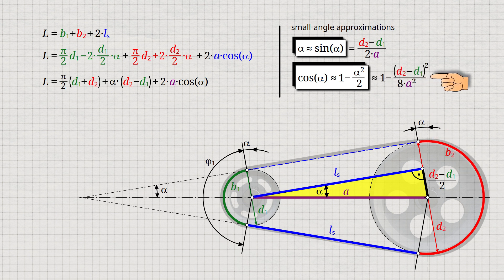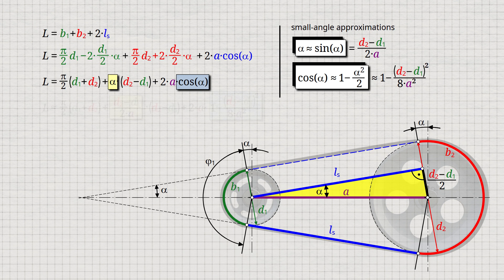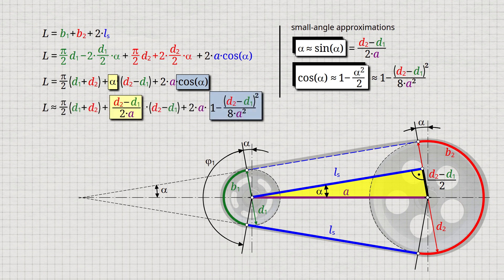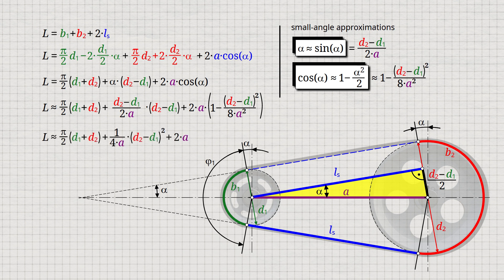In the formula for calculating the belt length, both the angle alpha and the cosine of the angle alpha are therefore replaced by the respective approximation formulas. By simplifying the terms, we finally obtain the given formula for determining the belt length, which depends only on the center distance and the diameters of the pulleys.